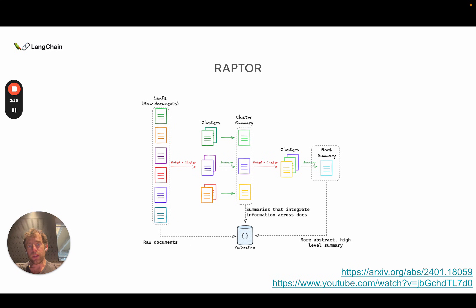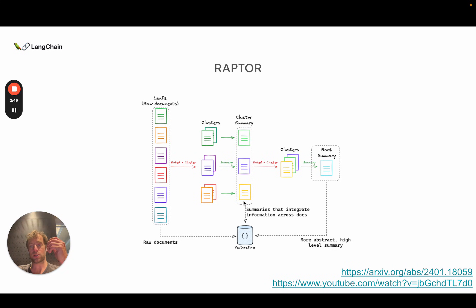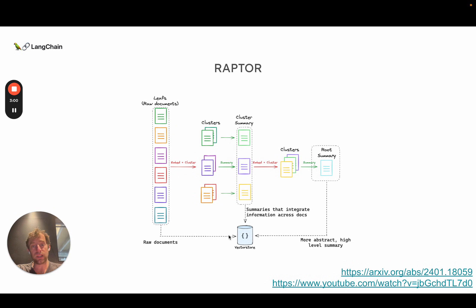What the paper shows is that if you collapse all these and index them together as a big pool, you end up with a nice array of chunks that span the abstraction hierarchy. You have detailed chunks from individual documents, but you also have chunks from summaries — distillations of the raw information. Raw chunks on the left represent your leaves, and higher-level summaries are all indexed together. Higher-level questions will be more semantically similar to those summary chunks, while lower-level questions will retrieve the more detailed chunks, giving you better semantic coverage across the abstraction hierarchy.